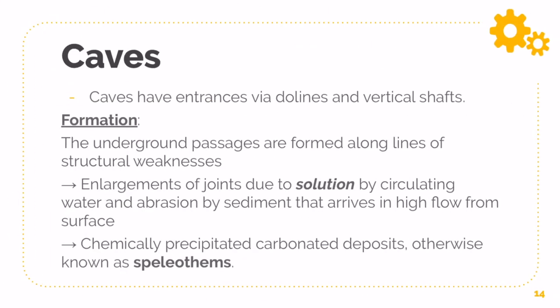Caves have entrances via dolines and vertical shafts. Underground passages form along lines of structural weakness — because of fissures, joints, and bedding planes, underground passages start to form. The part where it actually becomes a cave is when these joints start to enlarge due to solution — refer back to your chemical weathering video. By circulating water and abrasion by sediment arriving in higher flow from the surface, anything that infiltrates will cause solution and erosion to occur. As a result, there will be chemically precipitated carbonate deposits — when water dries up and evaporates, it leaves behind calcium bicarbonate, and this is where your speleothems start to form.